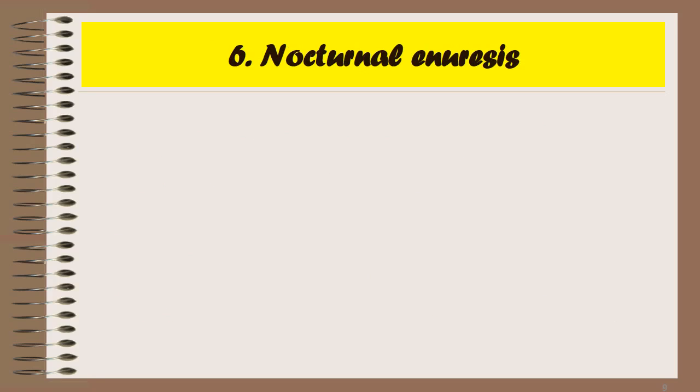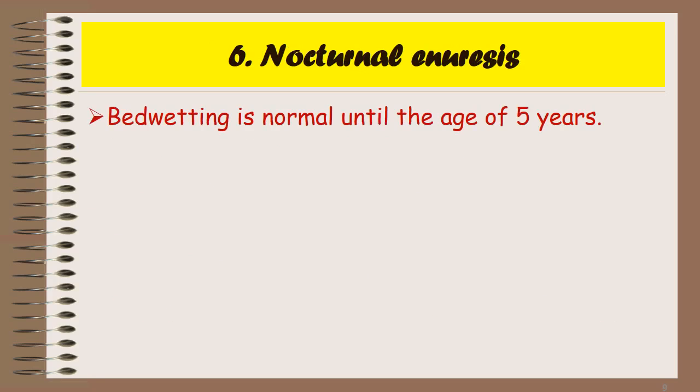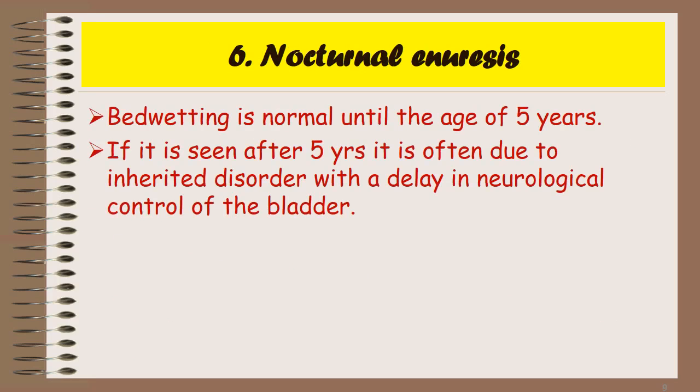Nocturnal enuresis, or bed wetting, is normal until the age of 5 years. If it persists after 5 years, it is often due to an inherited disorder with a delay in neurological control of the bladder.